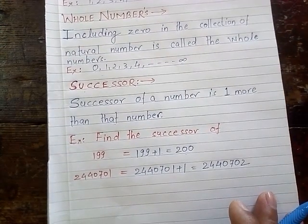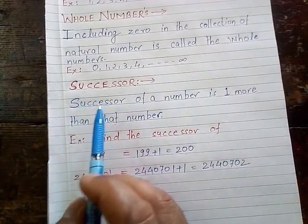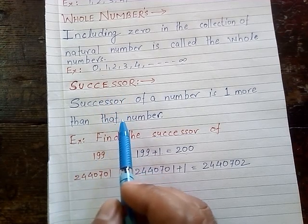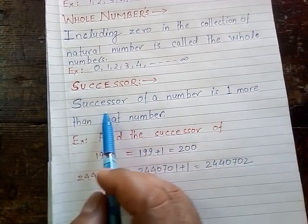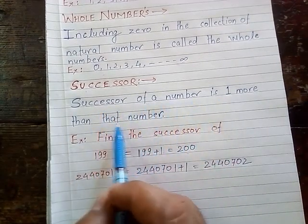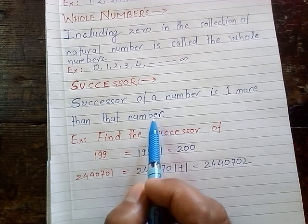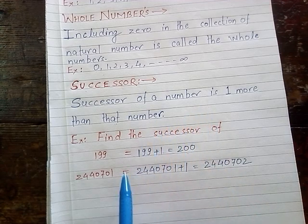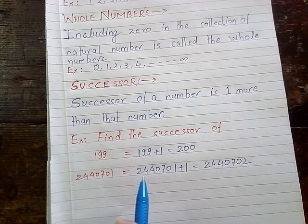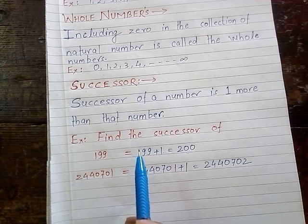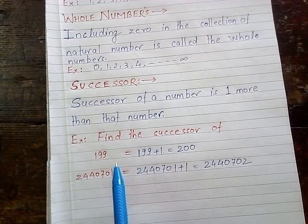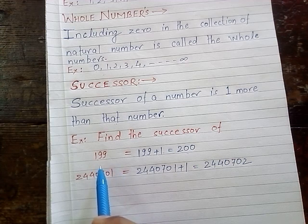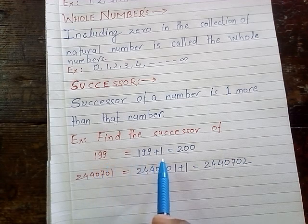Let us start our new topic: successor. What do you mean by successor? Successor means just comes after. The successor of a number is one more than that number. Suppose you want to find out the successor of a given number — you will add 1 to the given number, and then we will get the successor of that number.